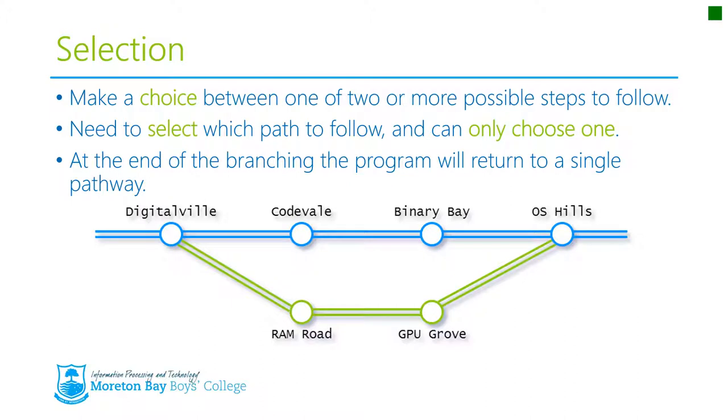Now selection constructs is when programming starts getting a little bit more complicated and also a little bit more useful. Basically, a selection is where you make a choice between one of two or more possible steps to follow. You need to select which path to follow, and you can only choose one. At the end of the branching, at the end of the split, you'll return to a single pathway.